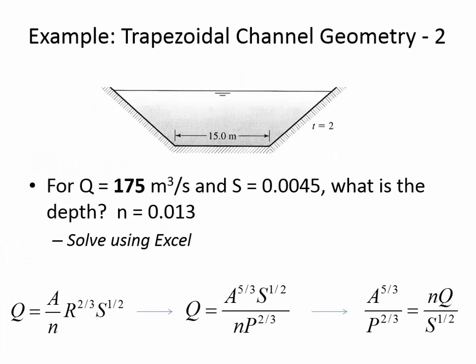The main topic of today's lecture is finding the unknown depth for a trapezoidal channel. For a rectangular channel, there's a simple linear relationship between depth and cross-sectional area. For a trapezoidal channel, each additional meter of depth also widens the top, so cross-sectional area accumulates non-linearly. The example uses Q = 175 m³/s — if your notes say 17.5, change it to 175.